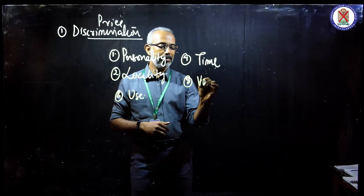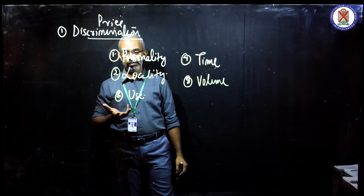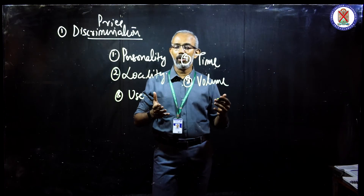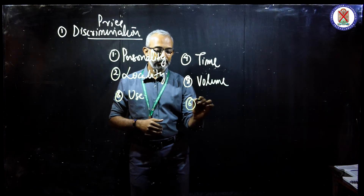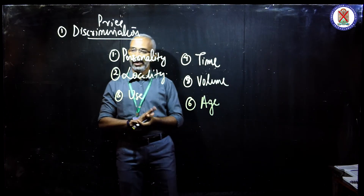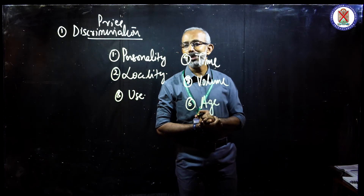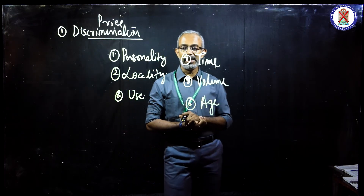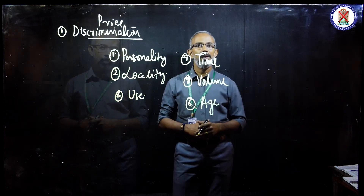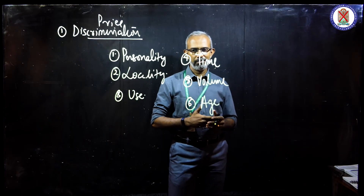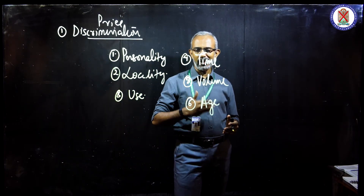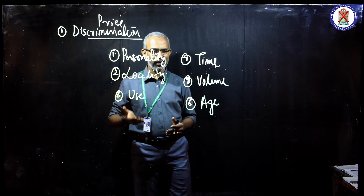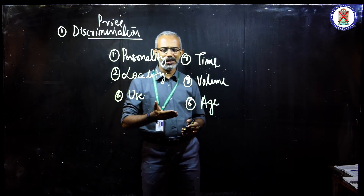Next is discrimination based on volume. If you buy larger quantities, you get a lower price than the price you get for a smaller quantity of purchase. This is called volume-based discrimination. The last category is discrimination based on age. Take the case of students who are given concessions on city services for their commute to and from school — they are charged at a much lower price than a regular passenger. Or take the case of rail travel: if you are a senior citizen, you get a lower price when you book at the counter or through IRCTC. Senior citizens are given a lower fare for rail travel. This is an example of discriminatory pricing based on age.